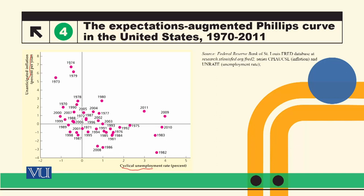The negative relationship between unanticipated inflation and cyclical unemployment is stable — it is a stable negative relationship.